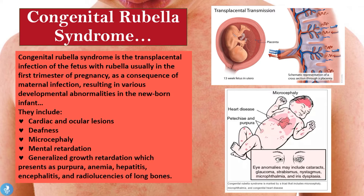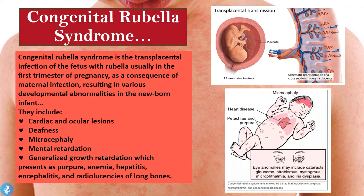The rubella virus is transmitted to the baby through the placenta, with quite devastating effects. These can include heart disease or cardiac malformations, petechiae and purpura (areas of bruised skin), anemia, hepatitis (inflammation of the liver), encephalitis (inflammation of the brain), and radiolucencies in the long bones indicating improper development. These patients can also suffer deafness, mental retardation, and eye anomalies including cataracts, glaucoma, strabismus, nystagmus, microphthalmia, and iris dysplasia — all resulting in terrible lifelong complications.